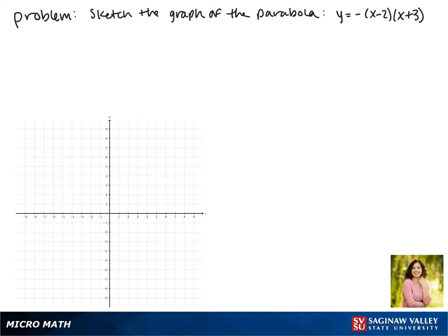Today we'll be sketching the graph of the parabola y equals the negative of x minus 2 times x plus 3. This equation was given in what's called intercept form because it will tell us our x-intercepts. One thing to note is that this negative out front tells us that it opens down.